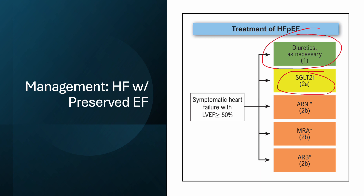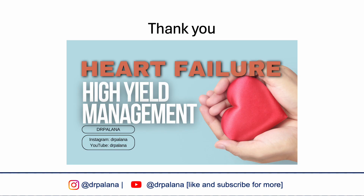Primary therapies for heart failure with preserved ejection fraction include diuretics to control symptoms of volume overload and antihypertensive agents to target a systolic blood pressure of less than 130. In patients with worsened symptoms and concomitant atrial fibrillation, restoration of sinus rhythm or rate control may reduce symptoms. SGLT2 inhibitors were shown to reduce heart failure hospitalizations but not mortality and should be strongly considered in this population with a class 2A recommendation. This concludes the talk on high-yield heart failure management for NBME internal medicine and USMLE Step 2 exams.